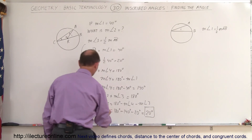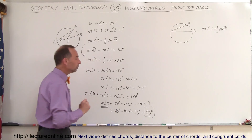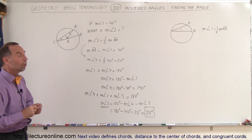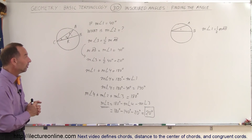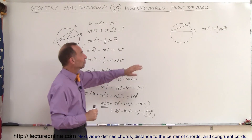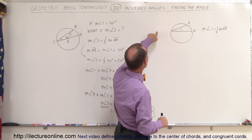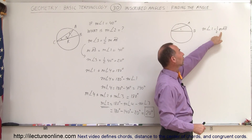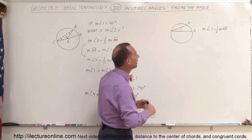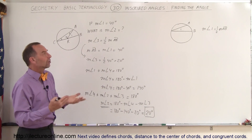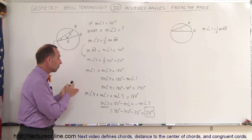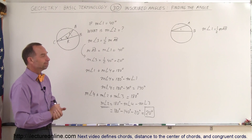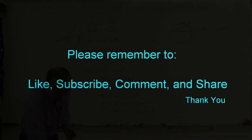So that is the measure of angle 2, and that's the answer we're looking for. By using the rules we've learned, especially that the measure of an inscribed angle equals one half the measure of the arc that it subtends, we were able to find the answer to this problem. That's how it's done.